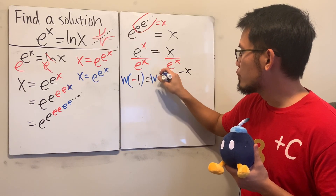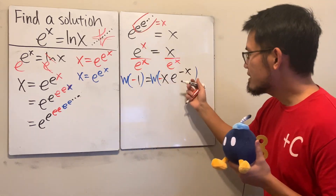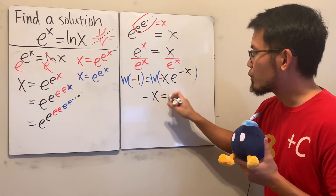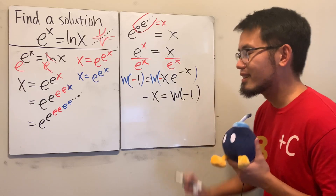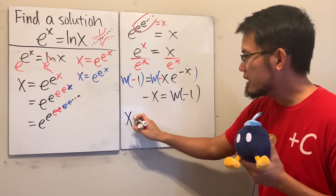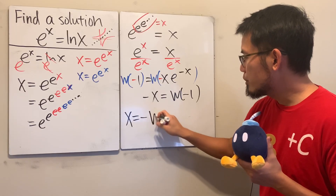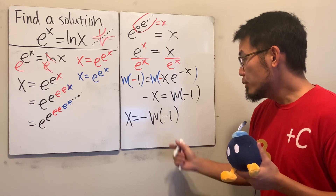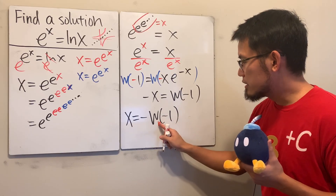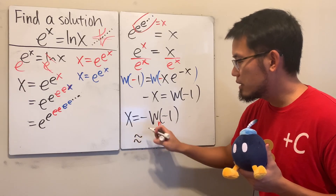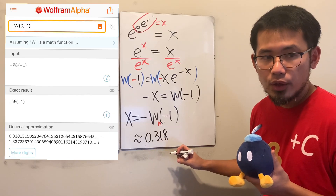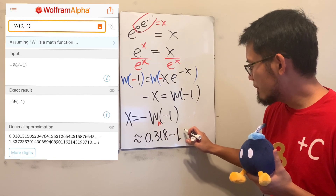Multiply the negative on both sides, then apply the Lambert W function. The left-hand side gives us negative x because the Lambert W of the expression cancels, and the right-hand side gives us the Lambert W of negative 1. Dividing the negative on both sides, x is equal to negative W of negative 1. It looks like we only have one answer, but actually you can go to different branches of the Lambert W function. Picking 0 for the principal branch, you end up with approximately 0.318 minus 1.337i.